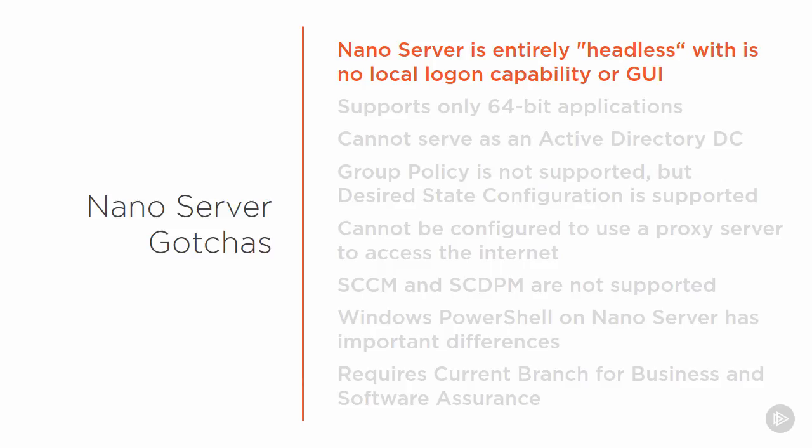For example, you'll be able to adjust the IP address for the machine, but not the DNS server. So there's extra work required in order to get these NanoServers up and operational, in ways that sort of drive you automatically towards the use of automation in spinning them up.